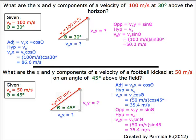What are the x and y components of a velocity of 100 meters per second at 30 degrees above the horizon? So that's the question over here.